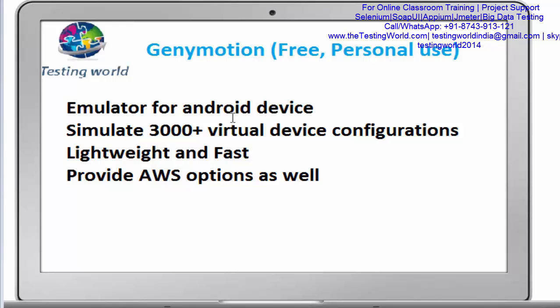When we are going to execute our Android application test cases, we want to execute them on different devices. While working, we have only a few real devices. For example, I have developed an Android application and I want to test it on all Samsung devices, all HTC devices, and many others. But in reality, I have only one Samsung and one HTC mobile phone. So how do we test on different devices?